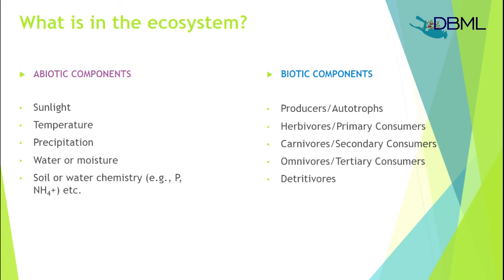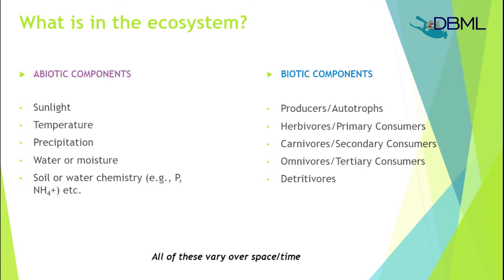The biotic components include producers, which are autotrophs — plants and algae that produce energy from sunlight and form the base of the food chain. Then we have herbivores as primary consumers, carnivores as secondary consumers, and omnivores which can be secondary and tertiary consumers. For example, fish eating phytoplankton are primary consumers, other fish feeding on them are secondary consumers, and sharks feeding on those are tertiary consumers. We also have detritivores which break down decaying matter. These all vary over space and time — sunlight, for instance, is not available throughout the day.